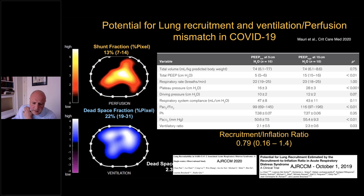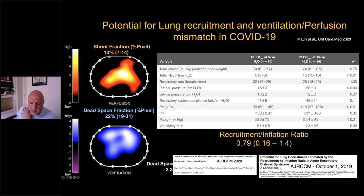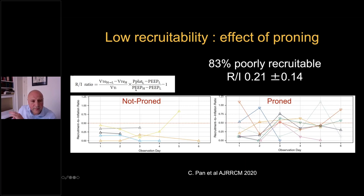This indicates that dead space seems to be the predominant factor in COVID-19 compared to recruitability of these patients. References on the recruitment-to-inflation ratio: the Liu Chen paper explains how to do it in normal conditions, and the PAN study shows how to do it in COVID-19 with reduced resources. Using the recruitability test in COVID-19, 83% of this population was poorly recruitable, with recruitment-to-inflation ratio well below 0.5. This recruitment could be improved after prone positioning, which is important in terms of the management we provide.